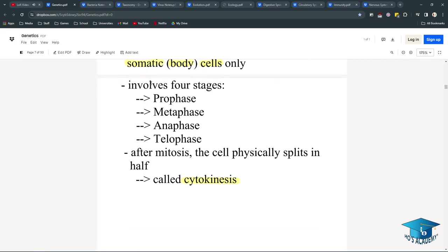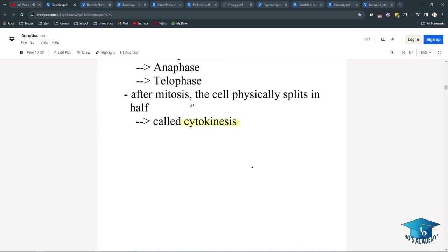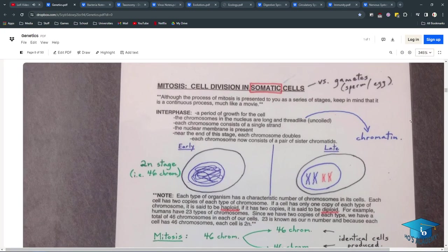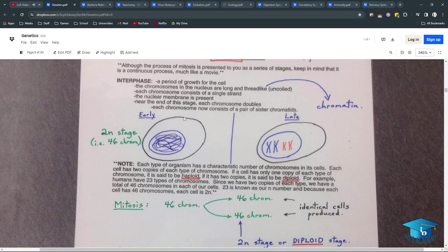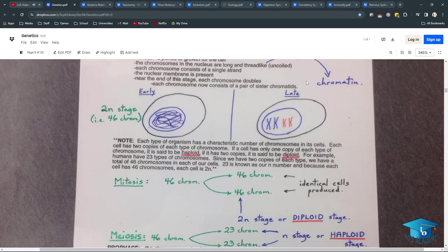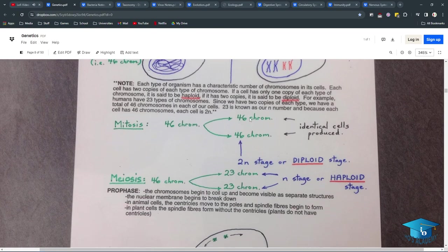Mitosis involves the somatic cells. And has PMAT stage, prophase, metaphase, anaphase, telophase, four. After mitosis, the cell physically splits in half through cytokinesis. So here's some of the notes he took. So interphase is where your chromosomes are long and thread-like uncoiled. And then they are doubled by the end of interphase. Yep, so the DNA replicates. So this is where all that nucleic acid information comes in handy. Mitosis, your 46 chromosomes turn into two cells with 46 chromosomes each. Meiosis, you actually have your chromosomes into haploid. And so you actually start from a 46-chromosome diploid cell into four different haploid cells, I believe.